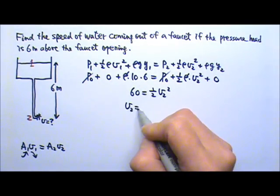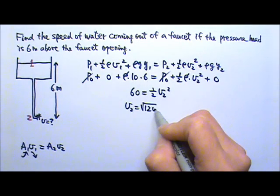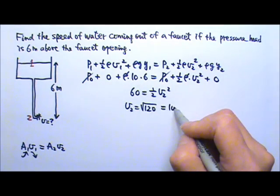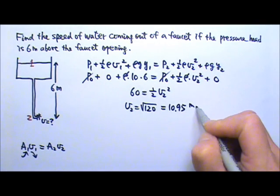And we'll be able to solve for V2, it is square root of 120, which is about 10.95 meters per second.